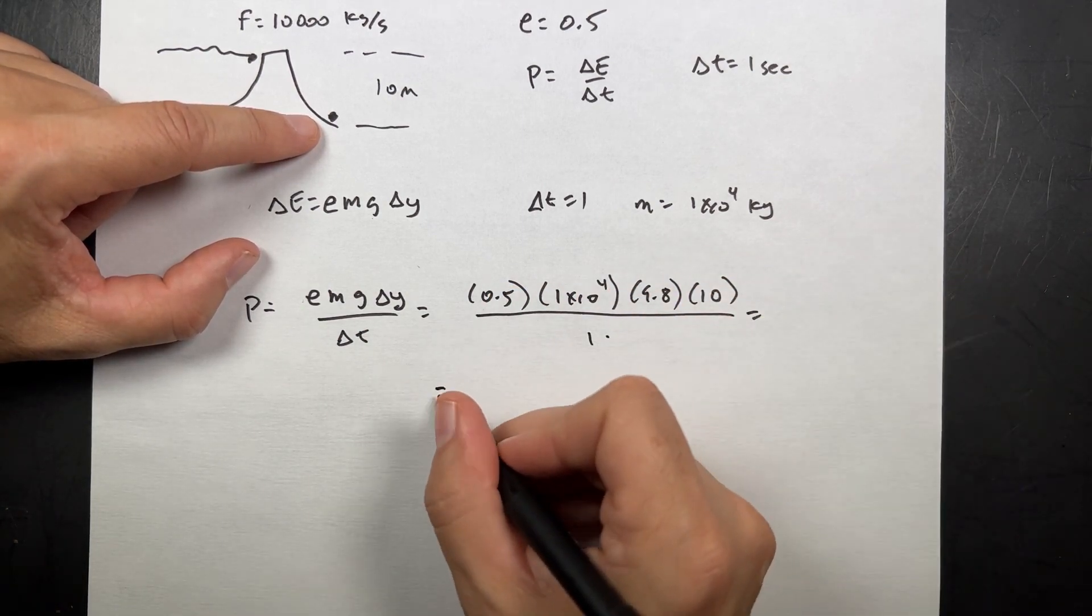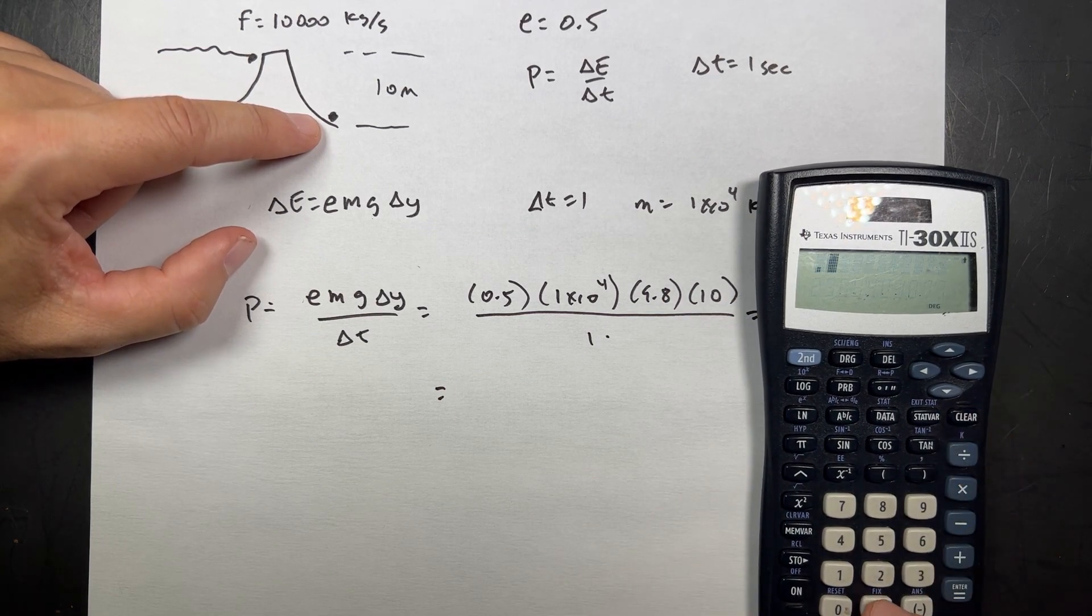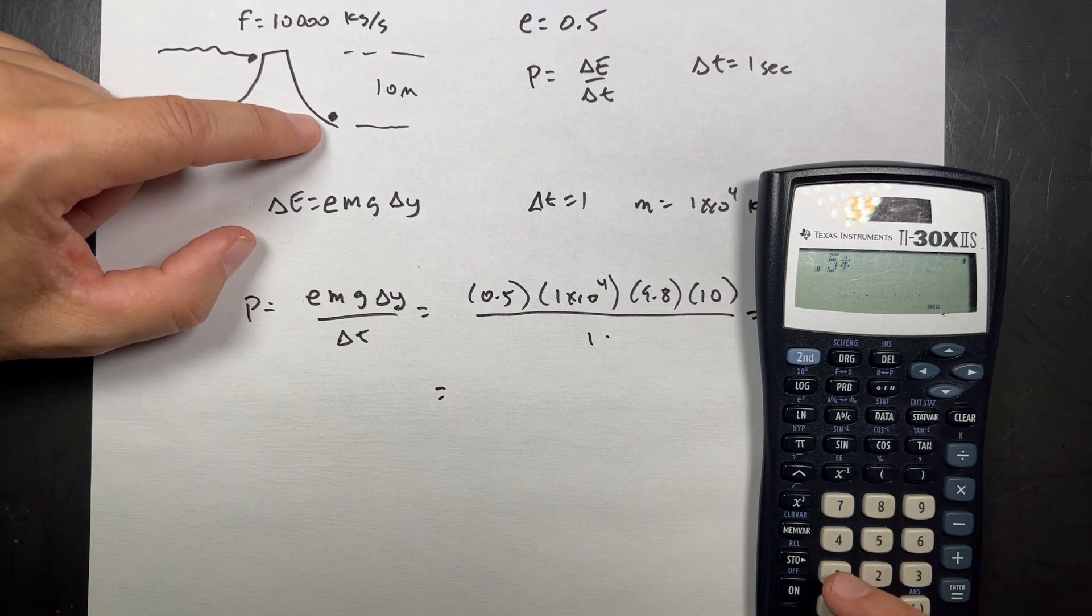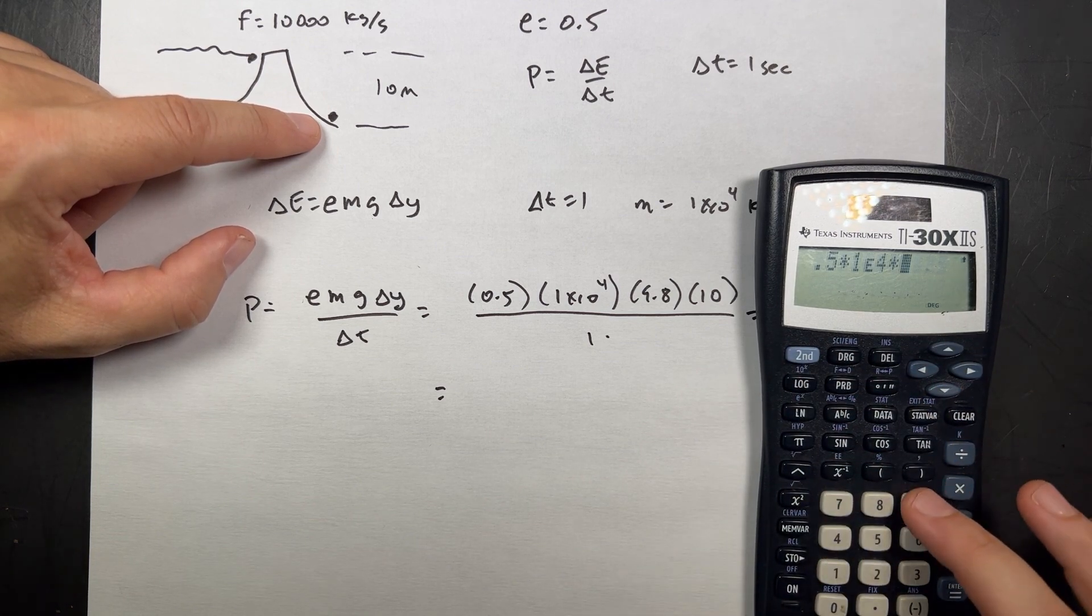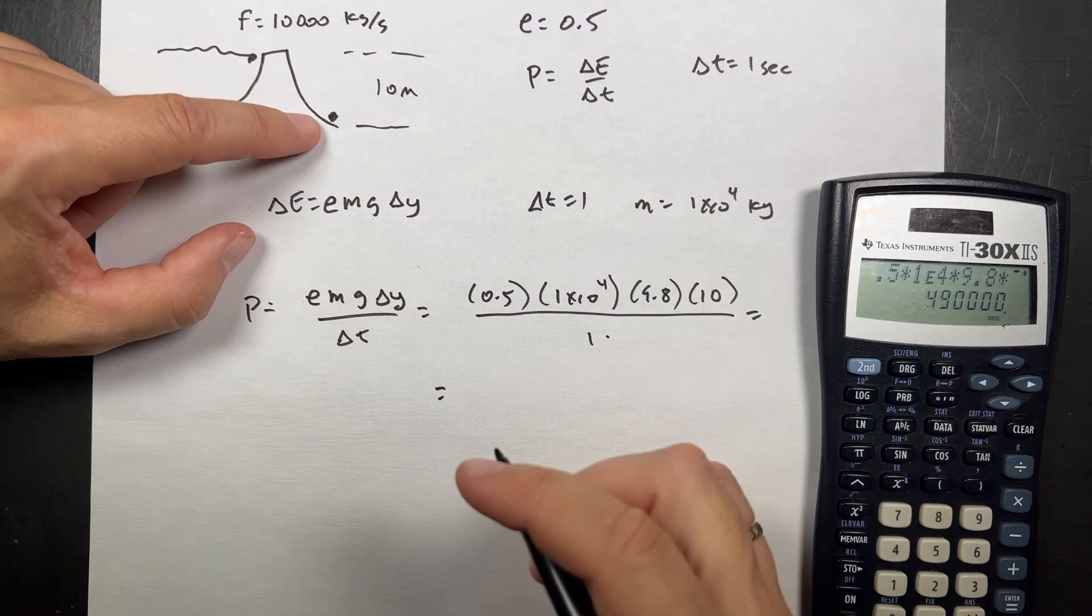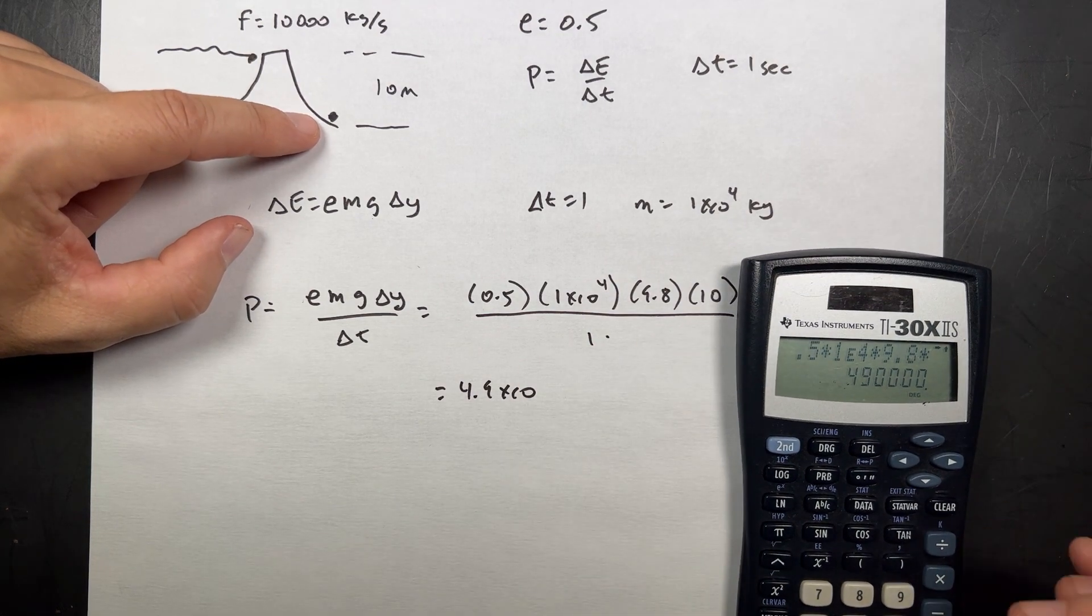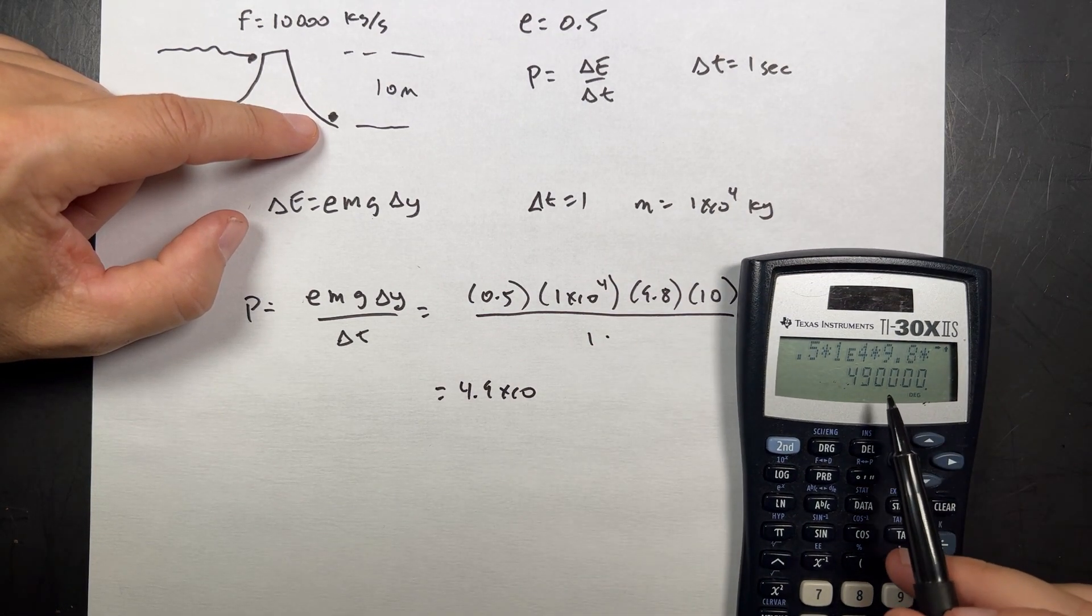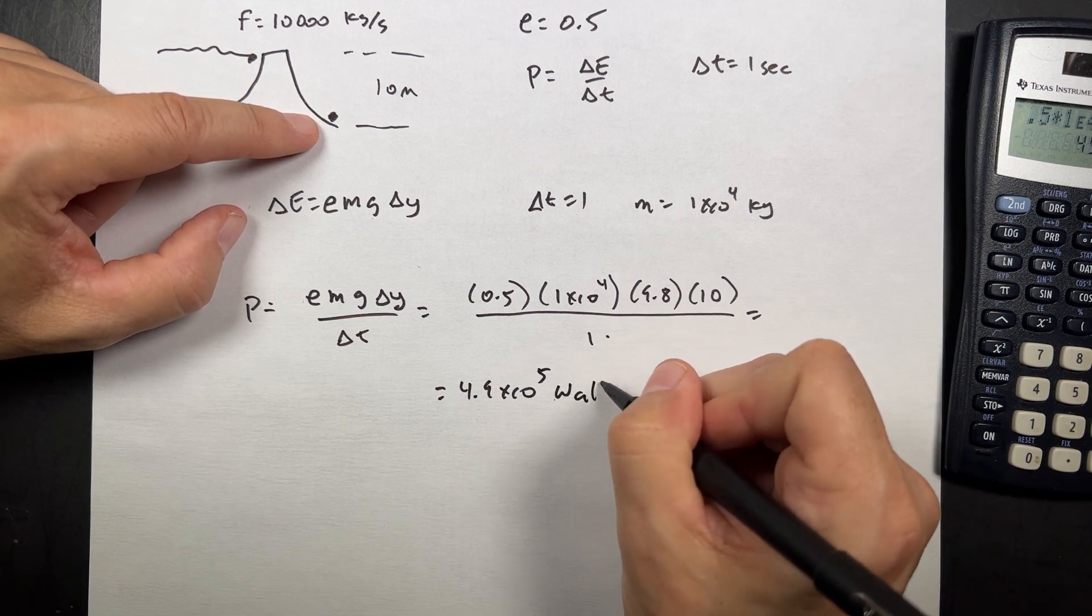So let's put that in our calculator. Clear. 0.5 times one times ten to the fourth times 9.8 times ten equals. I get 4.9 times ten to the one, two, three, four, fifth watts. That's actually not bad.